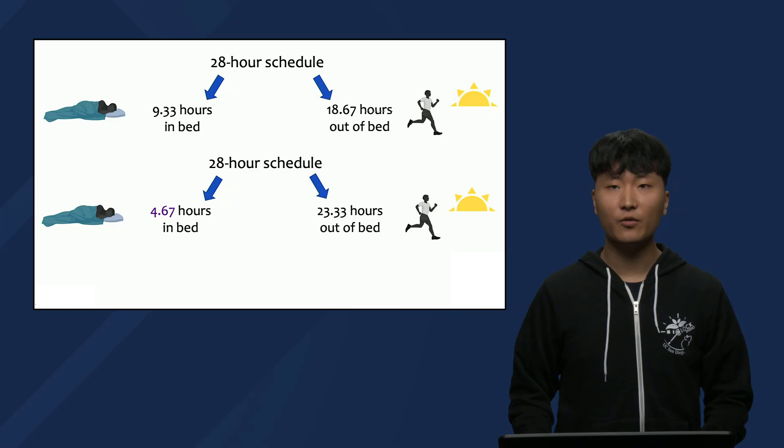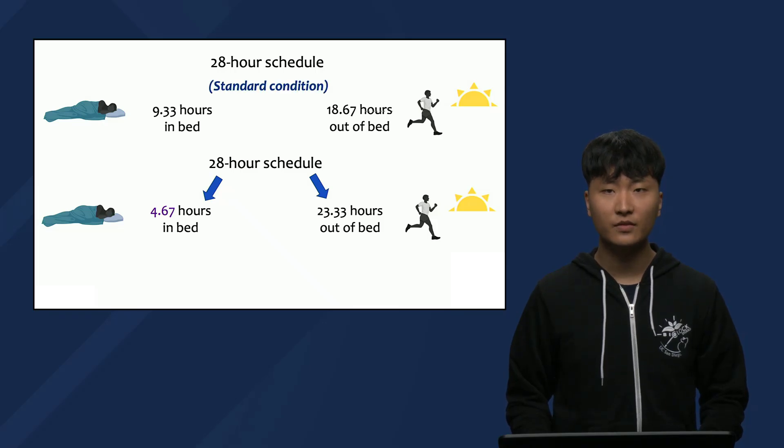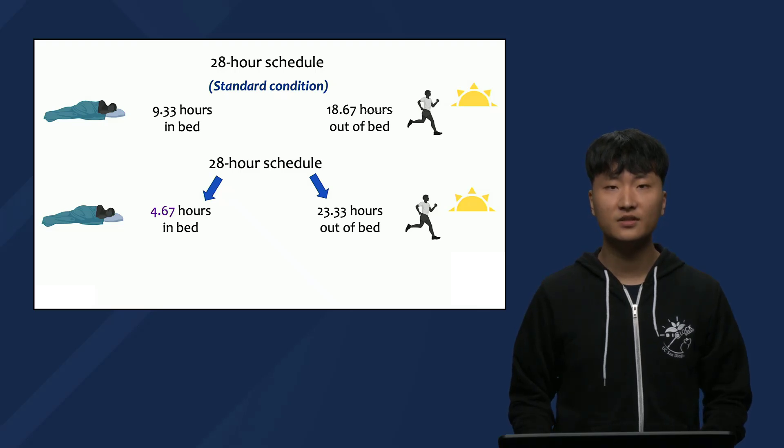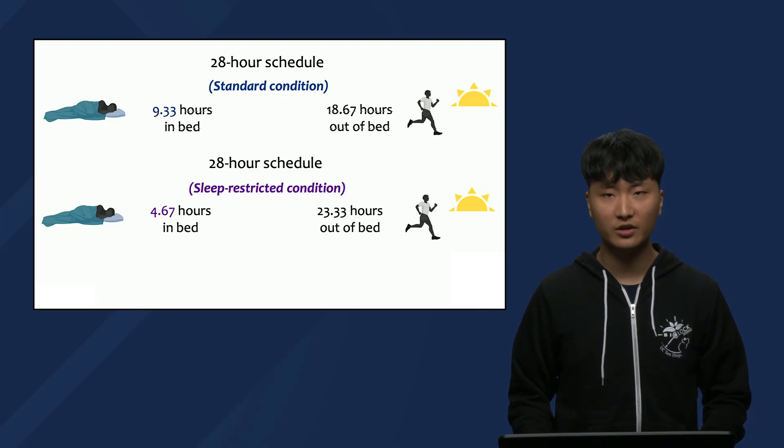Dr. Roche's team also looked at whether sleep restriction or shorter sleep could affect the performance of the participants. In this way, they examined the effects of circadian phase, prior wake, and sleep restriction, all in the same study. So while the first group could sleep for 9.33 hours in each 28-hour day, we'll call that the standard condition, a second group of participants could only sleep for 4.67 hours in each 28-hour day, so half as much, and we'll call that the sleep-restricted condition.